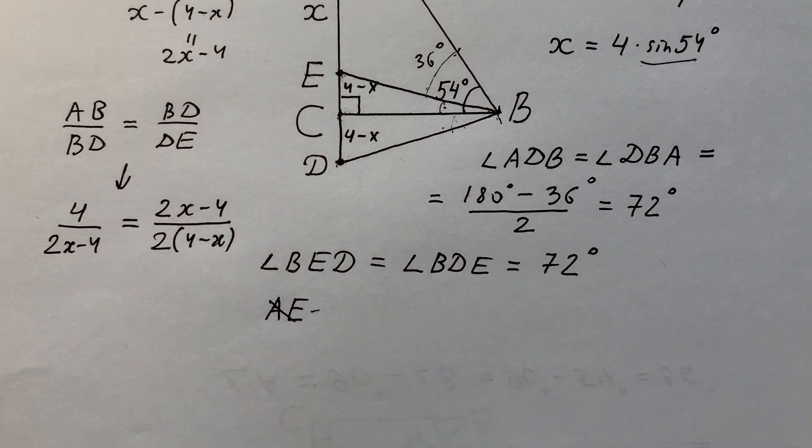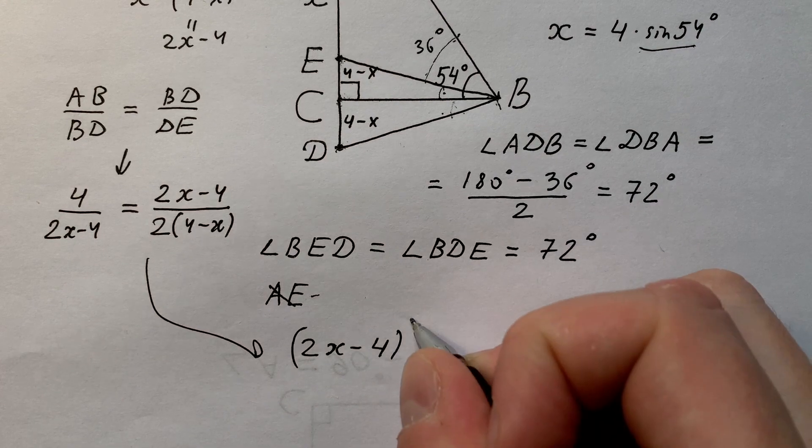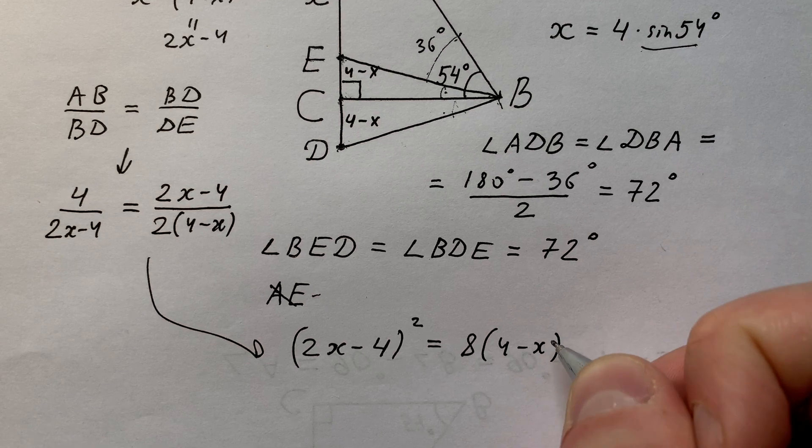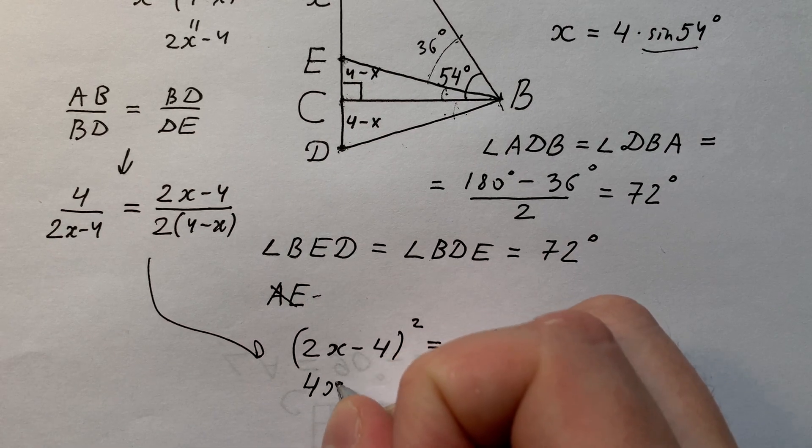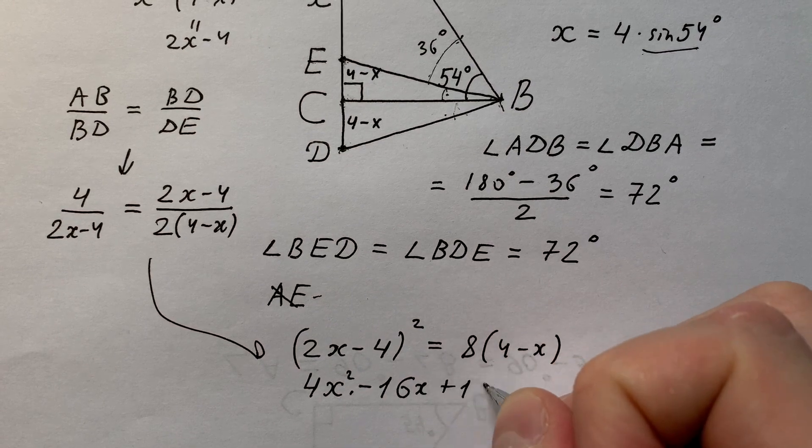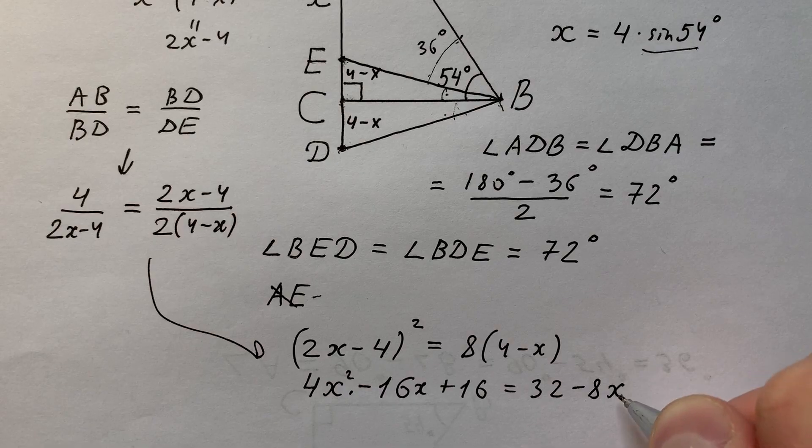And from this proportion we can write 2 times (x minus 4) to the power of 2 equals 8 times (4 minus x), or 4x² minus 16x plus 16 equals 32 minus 8x.